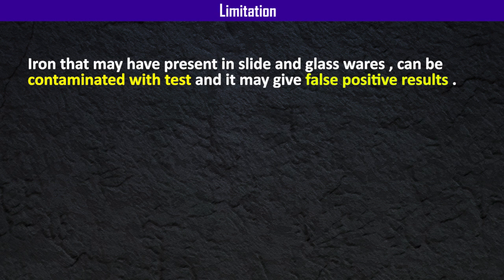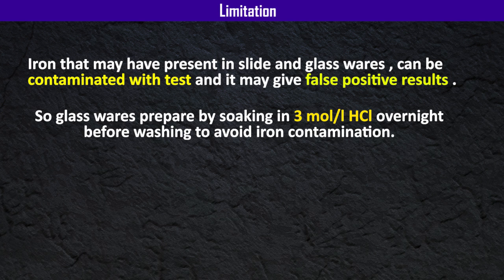Limitation: iron that may be present inside the glassware can be contaminated with dust and may give false positive results. Therefore, glassware should be prepared by soaking in 3 mol/L hydrochloric acid overnight before washing, to avoid iron contamination.